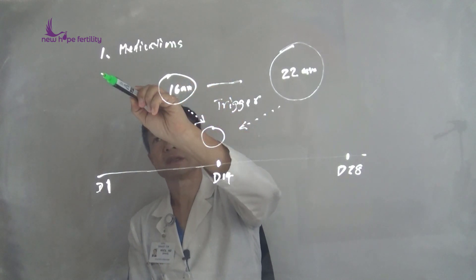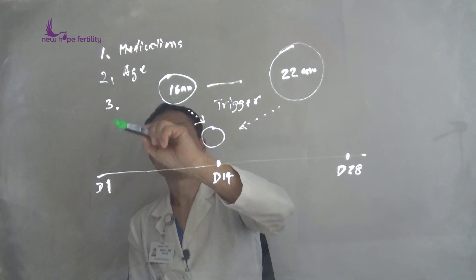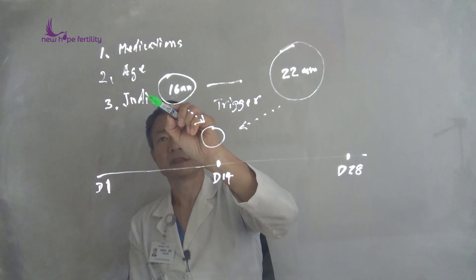Number two, lady's age. And number three, individual variation.